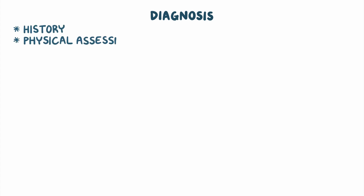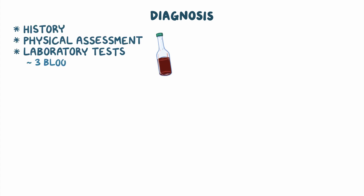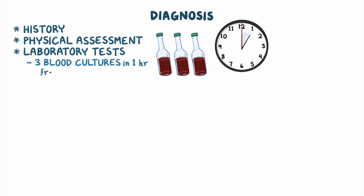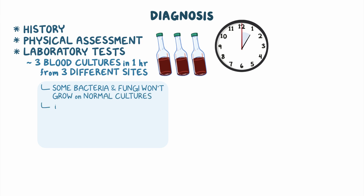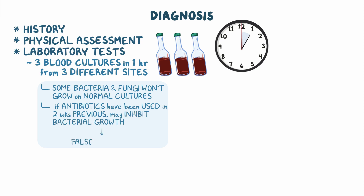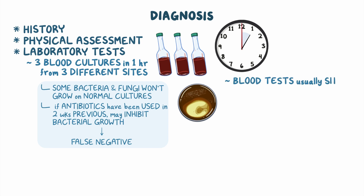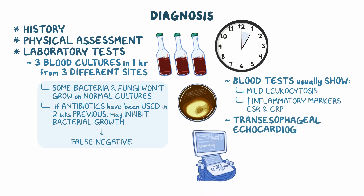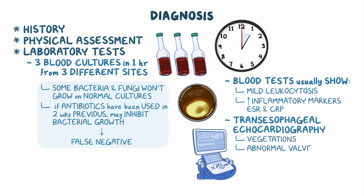Diagnosis of endocarditis starts with the client's history and physical assessment, followed by laboratory tests where three blood cultures should be obtained in an hour from three different sites. However, some bacteria and fungi won't grow on normal cultures, or if antibiotics have been used in the two weeks previous to obtaining the cultures, they may inhibit bacterial growth, causing false negative results. Blood tests usually show mild leukocytosis, as well as increased inflammatory markers, ESR, and CRP. Transesophageal echocardiography can also be used to visualize the heart and look for vegetations or abnormal valve movement.